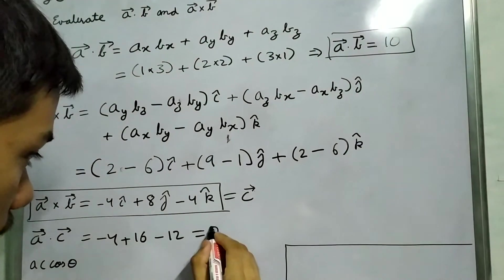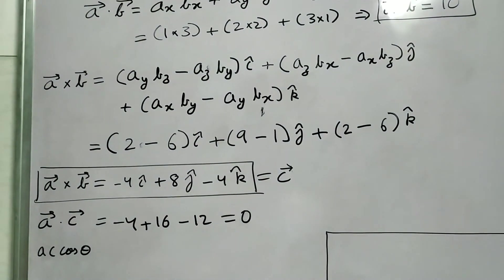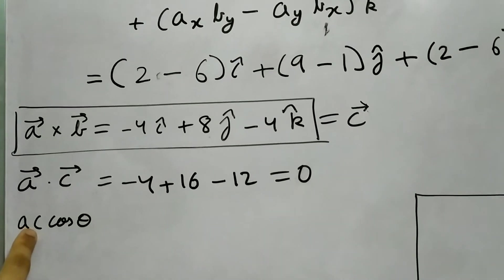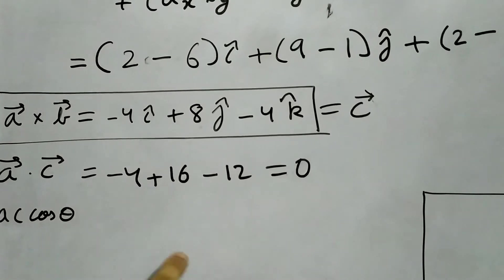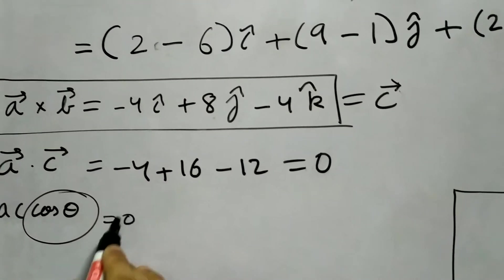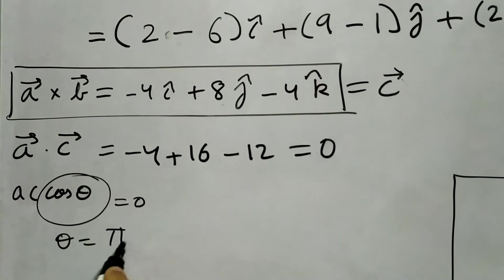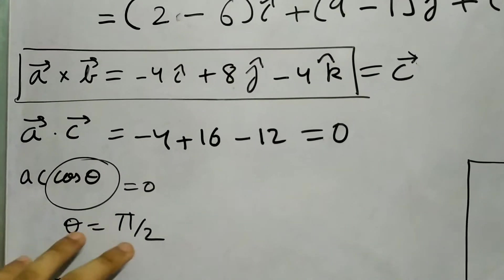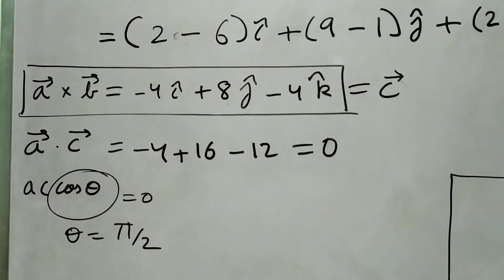So this means since magnitudes of either of A or B, none of them is 0, which means the only thing possible is cos theta equal to 0, which happens at theta pi by 2. So the angle between them is pi by 2 or they are perpendicular.